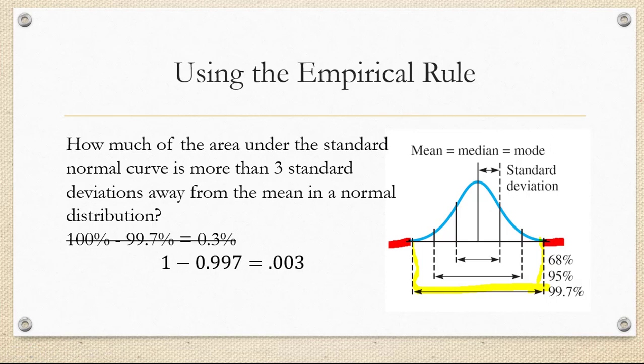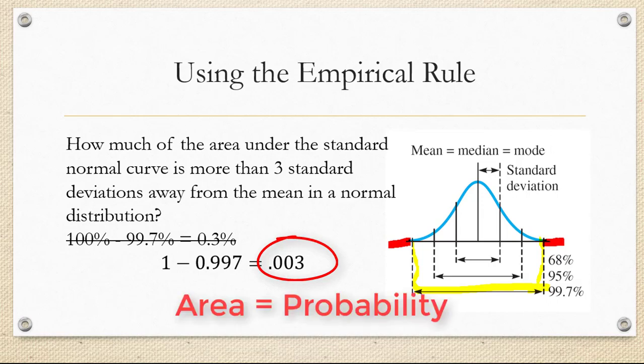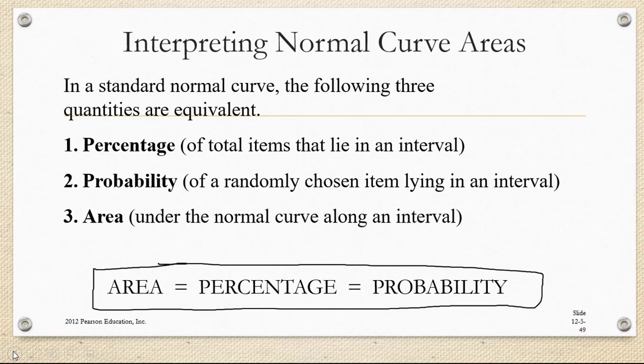This also means that the probability of a randomly selected data item falling more than 3 standard deviations away from the mean is only 0.003. Because when it comes to normal curves, area, percent, and probability are all the same.